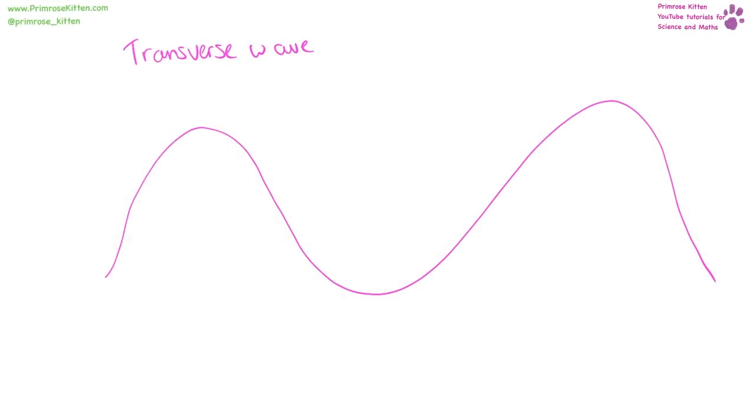A transverse wave goes up and down. From one point to another point, and this doesn't matter whether it's from the top to the bottom, from the middle to the middle, we have the wavelength. The amplitude is measured from the middle to the top, or from the middle to the bottom.